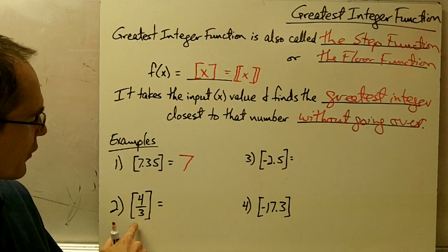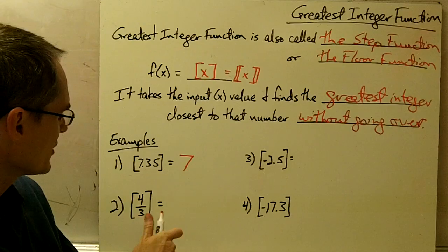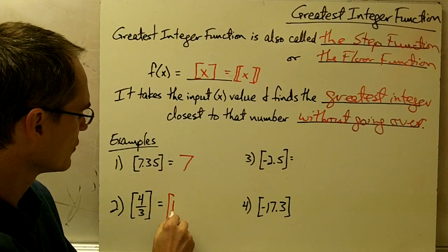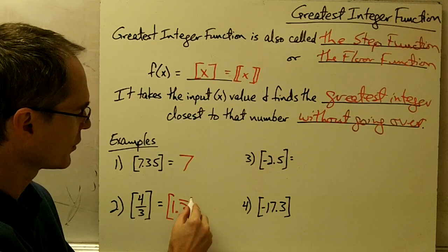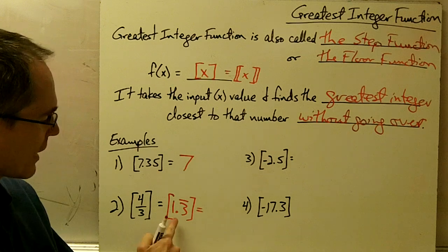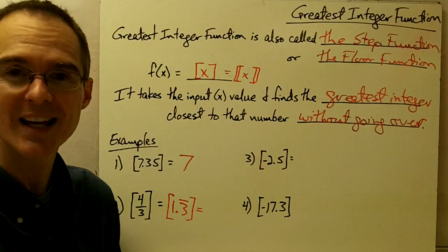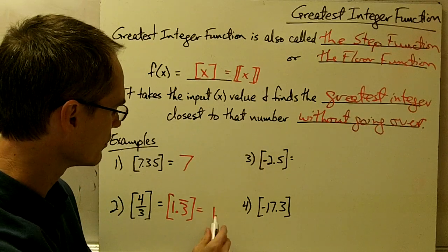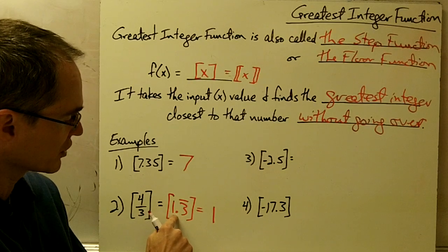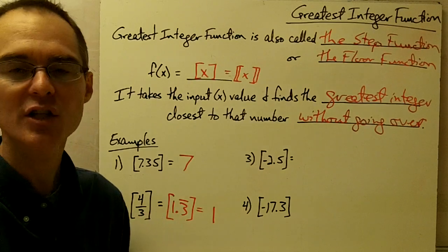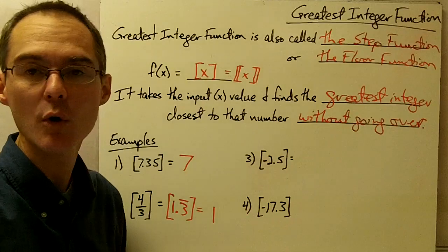The greatest integer of 4 thirds — it's typically easier to think about greatest integer functions with decimal numbers, so I'm going to change this from 4 thirds into 1.3333 repeating. What's the largest integer closest to 1.333 that doesn't go over? That number is going to be 1, because 1 doesn't go over 1.3. The next closest integer would be 2, but 2 is greater than 1.3, and we don't want to go over.